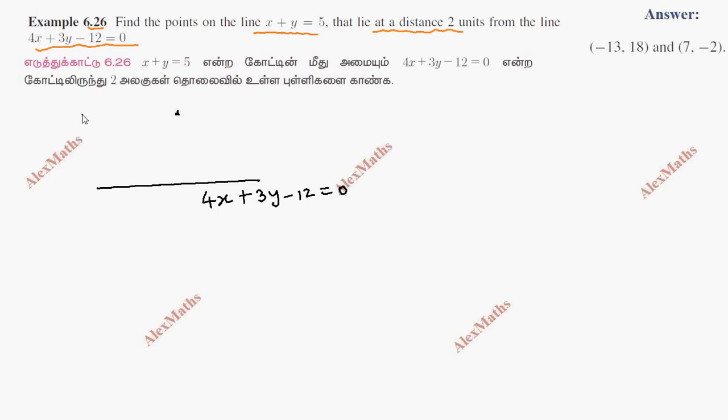So in this line, there is a line. That line is here. This line equals x plus y equals 5. If it is the point, the distance is 2 units. In this particular line, it is 2 units.